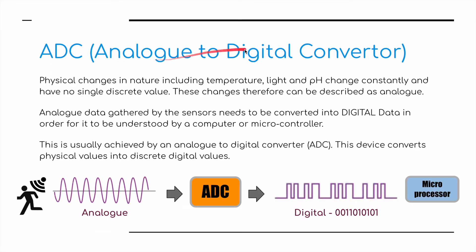Now I'm going to talk about something called an ADC — an analog to digital converter. Physical changes in nature, including temperature, light, and pH, change constantly and have no single discrete value. These changes can therefore be described as analog. Analog data gathered by the sensors needs to be converted into digital data in order for it to be understood by a computer or microcontroller. This is achieved by an analog to digital converter, or ADC, which converts physical values into discrete digital values. The analog reading from a sensor, such as a motion detector, then needs to go through an ADC to be converted into digital data that can be read by a microprocessor or computer system.